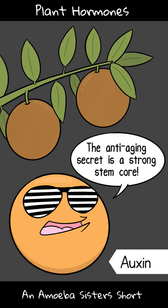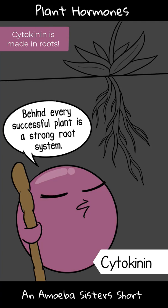Cytokinin: this one can control cell division in areas like the roots and shoots, and is also important for seed germination or delaying senescence.